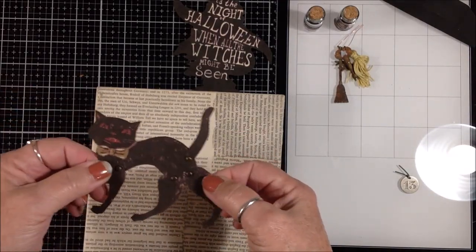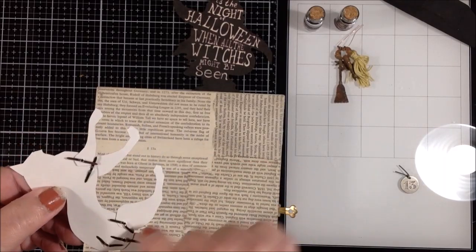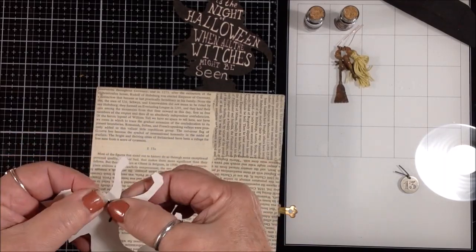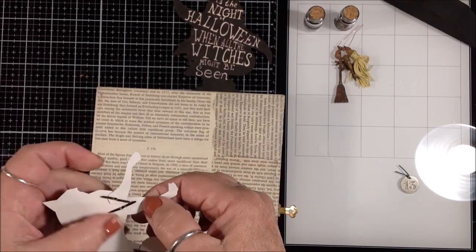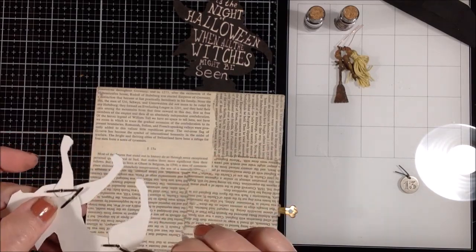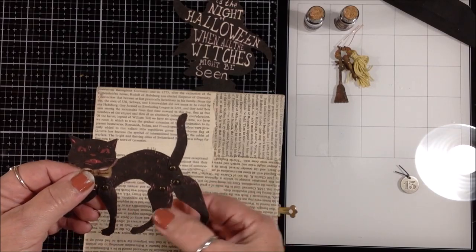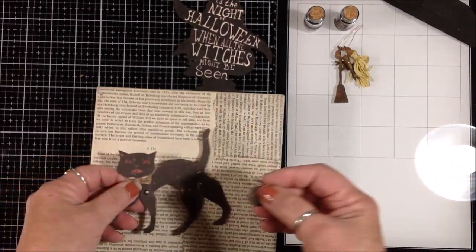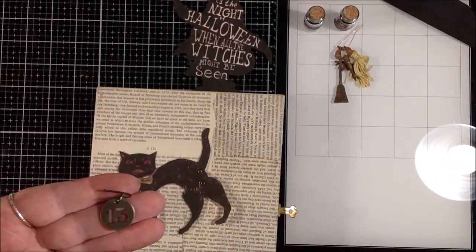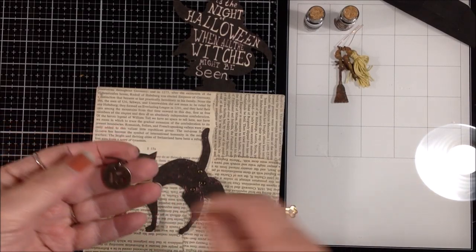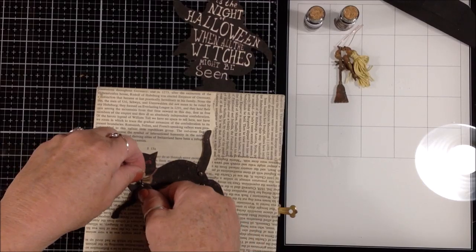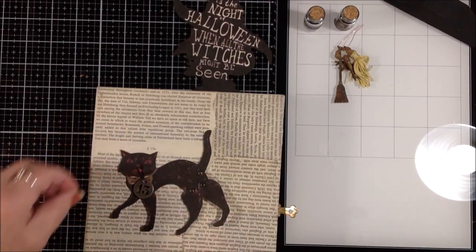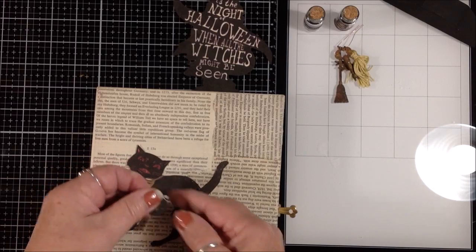I cut it out and attached the legs and the tail with some Tim Holtz little brads. And I didn't realize these had the long legs on the back of the brads - I had some that were short - but I didn't realize it until I had this already put together, so it's staying that way but it works. And then I have this little token that has a 13 on it, so like for Friday the 13th. I thought I might hang that around the cat's neck or I'll put it somewhere.